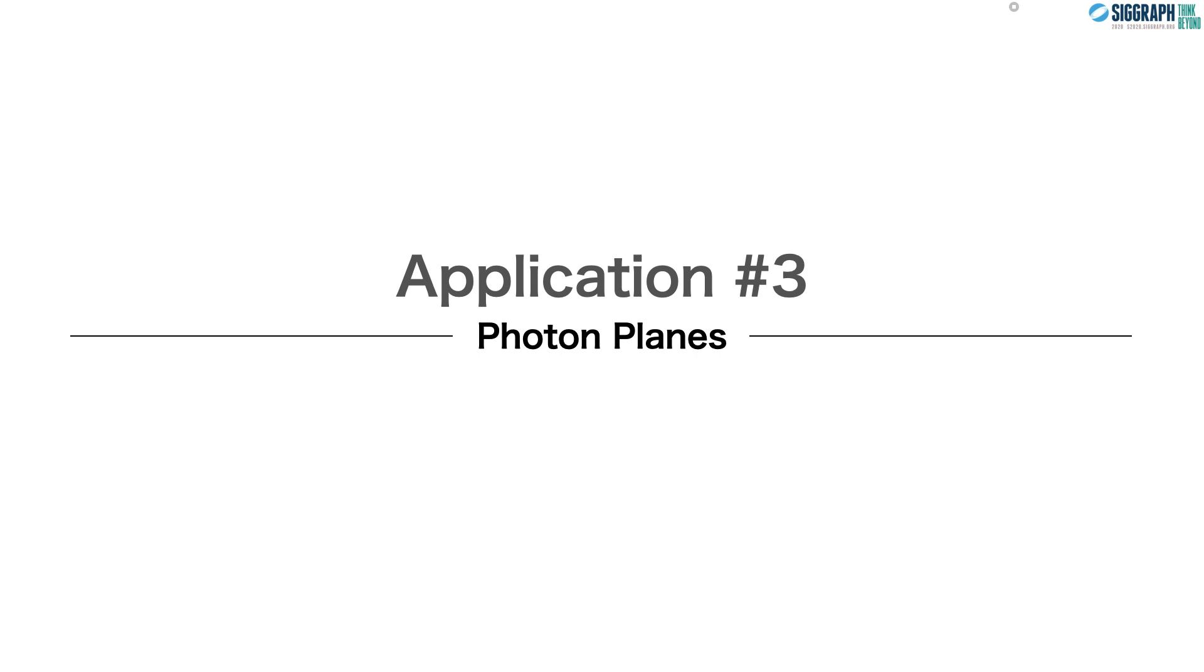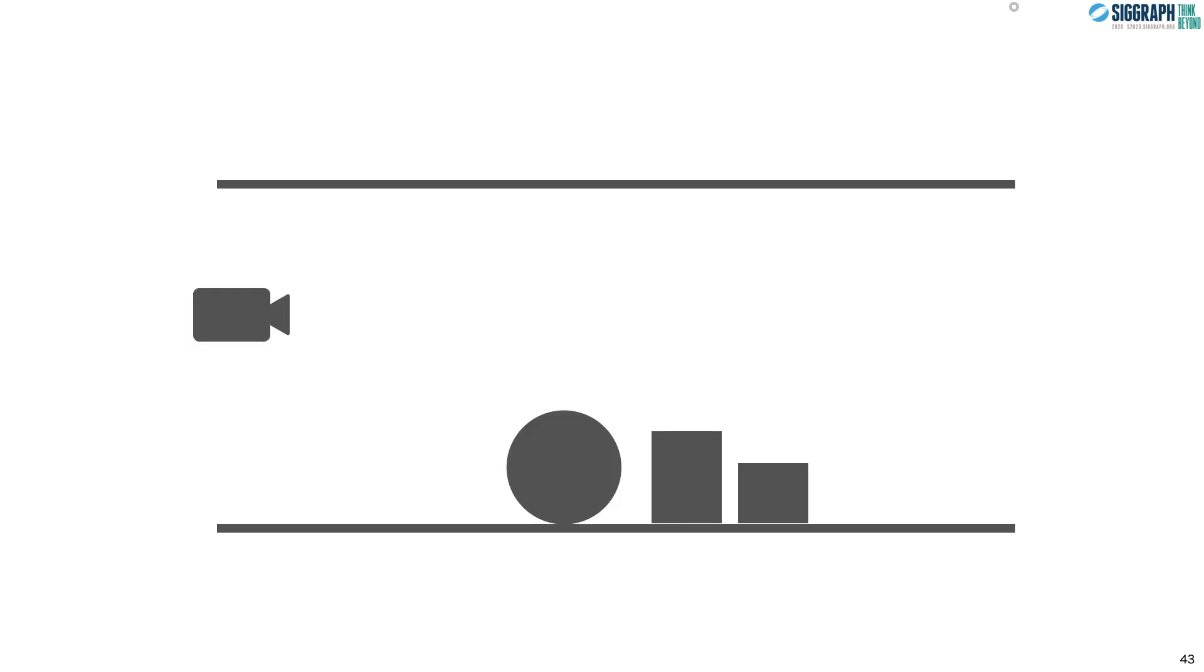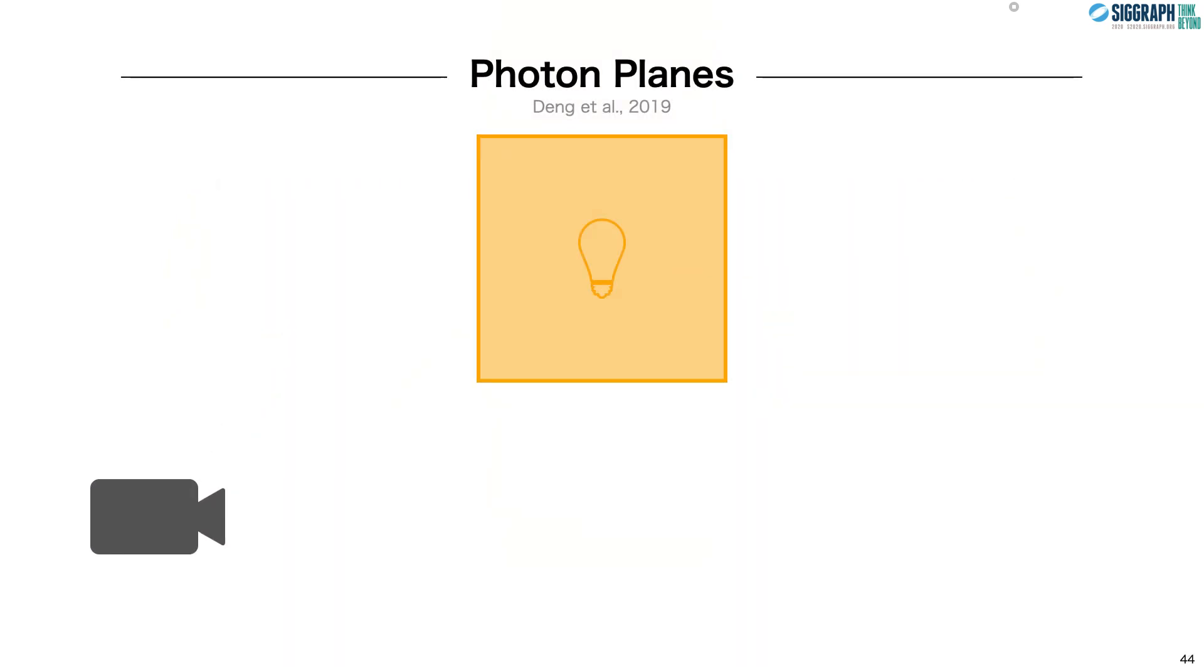Our third application is in photon planes. Another case where a continuum of techniques arises is in single scattering and volume rendering. One way to compute single scattering is photon planes, where an area light source emanates random planes. To generate a plane, Deng and colleagues propose to sample an edge and extrude the edge to generate a plane that is clipped by the light source. When a camera ray intersects this plane, it results in a complete path. But this path could have been generated by a different plane, for example this one.